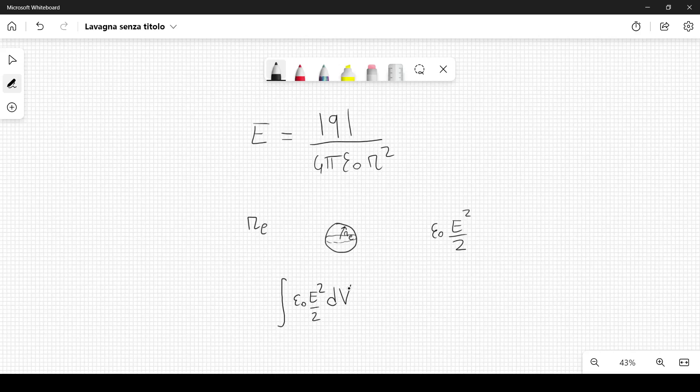We need to integrate over all the available volume in three dimensions, minus the volume occupied by the sphere, because the free space, all the space that we have available is the space that is not occupied by the sphere.